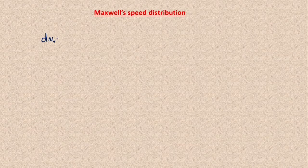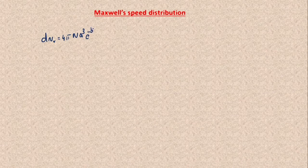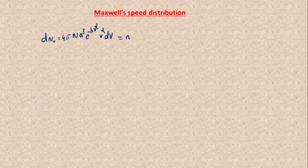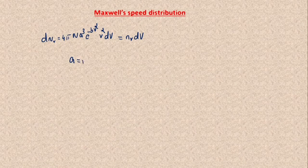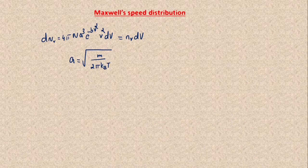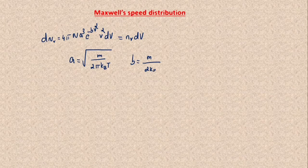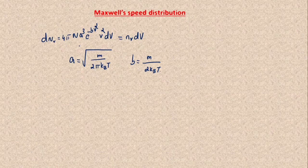Maxwell gave a formula related to this. The relation is: dN subscript V is equal to 4π N A³ e to the power minus BV² into V² dV, which equals N_V dV. Where A is equal to the square root of M divided by 2πK_BT — K_B is the Boltzmann constant — and B is equal to M divided by 2K_BT. This is the relation given by Maxwell to explain the speed distribution of the molecule.